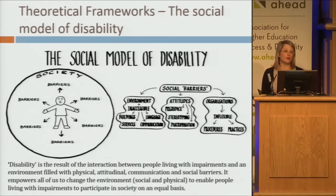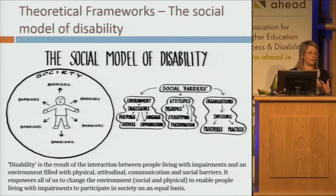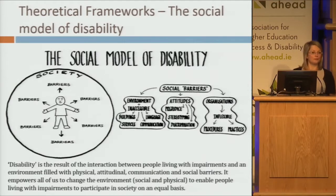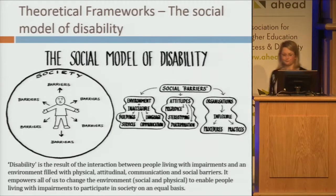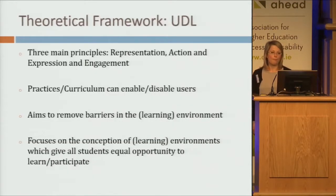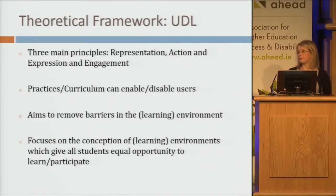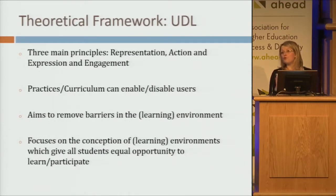If we look at the social model, it really empowers all of us, because all of us are able to change environments, to make environments more accessible. So this immediately appealed to us as a model we want to use and implement. And then we learned about Universal Design for Learning, which for us really gives us the tools to create those accessible environments. It gives us the tool to remove barriers.